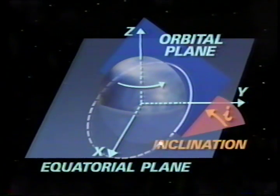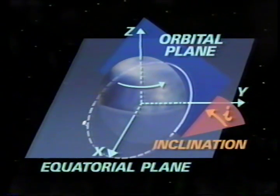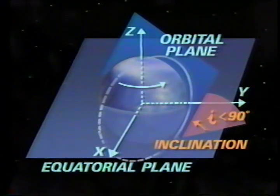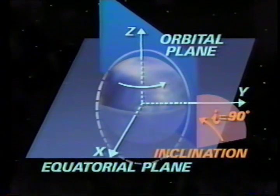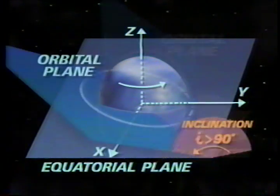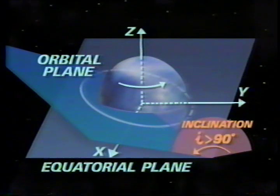Inclination is the angle between the equatorial plane and the orbital plane. A satellite which has an eastward velocity component at the ascending node has an orbital inclination between 0 and 90 degrees — called a prograde orbit. A satellite which moves due north at the ascending node is in a polar orbit with an inclination of exactly 90 degrees. A satellite with a westward velocity component is in a retrograde orbit with an inclination between 90 and 180 degrees.